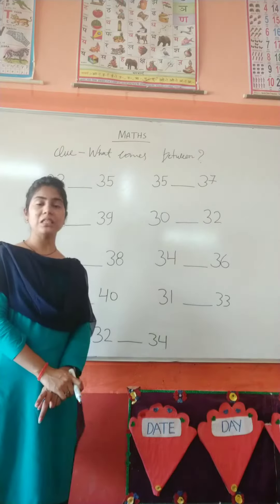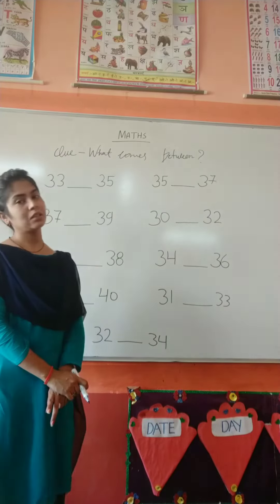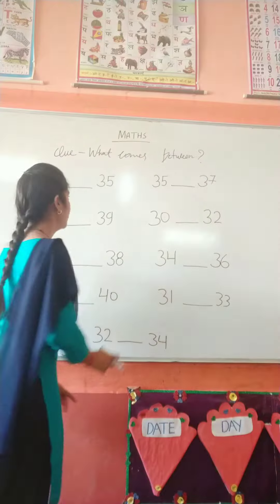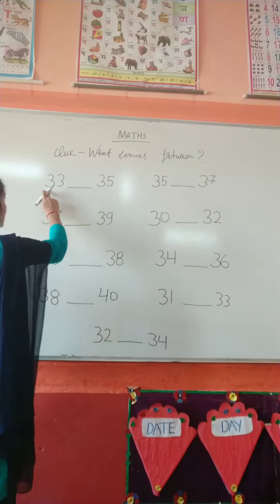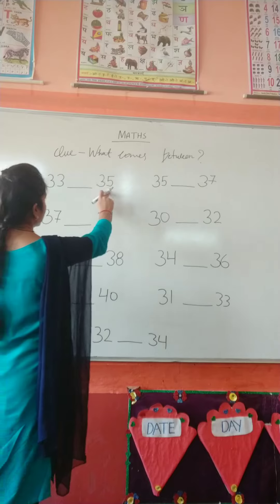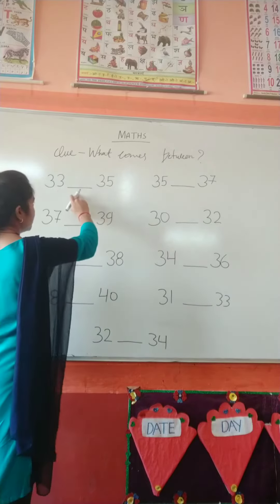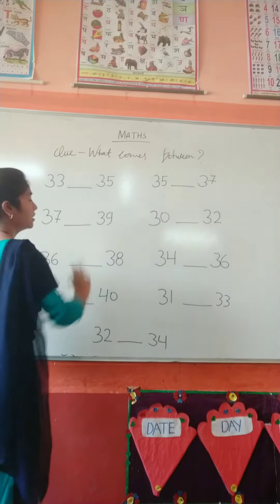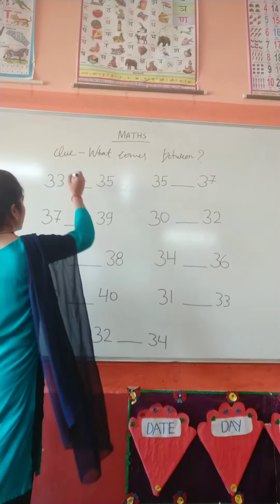Between means beech wala number. Between numbers means beech wala number. So which number is this? 33 and blank is 35. What comes between 33 and 35?